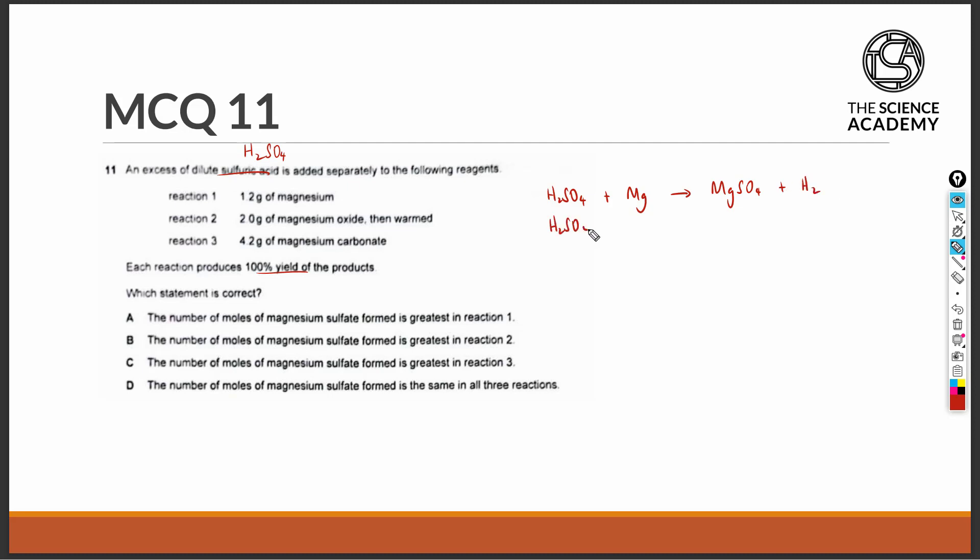In the second reaction, the acid is now reacting with a base of magnesium oxide. This gives us the same salt of magnesium sulfate, but since it's a neutralization reaction, water is formed as the byproduct.